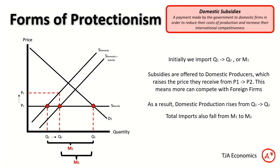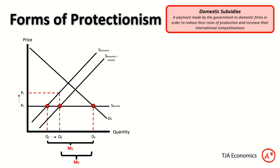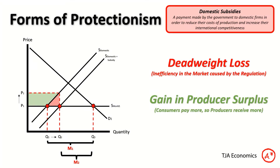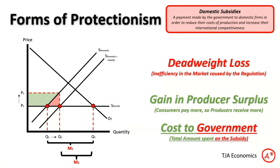The labelling of the areas is slightly different here. In red we have deadweight loss; in green, producer surplus gain. But because consumers aren't paying any more, consumers don't lose out, so there's less of an impact on the market. The red and green rectangle together represents the cost to the government — how much they actually spend on the subsidy. The subsidy diagram looks and is labelled a bit differently, but it has the same effect: producing more domestically and importing less.